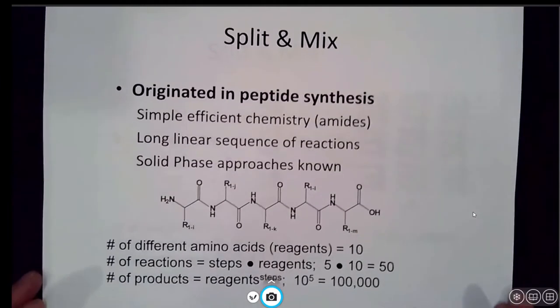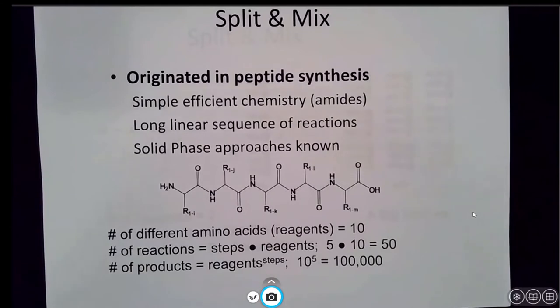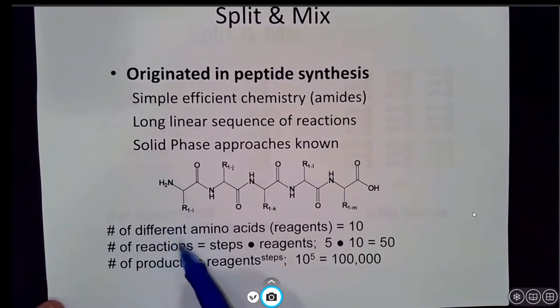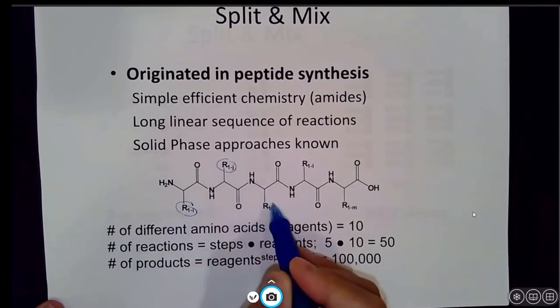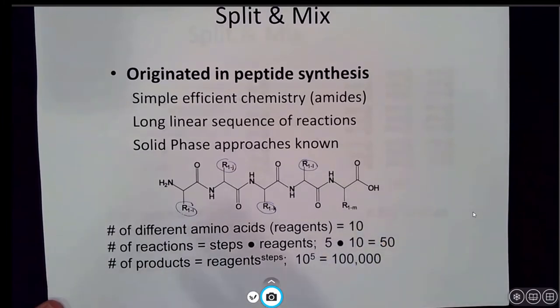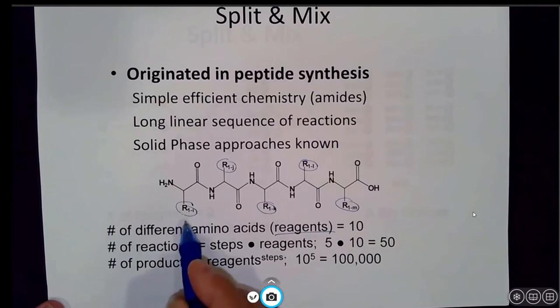I'm going to talk to you about a method called the split and mix method. This originated in peptide synthesis. You've already become very familiar with peptide synthesis - you can easily just change the R group and you can make very diverse peptides. With 20 different amino acids, it really gives us a lot of different options, and nature is certainly taking advantage of that, generating a very wide variety of different proteins and enzymes with vast structures and functions. If you take a look at this particular example, this is an efficient chemistry because amide synthesis is well adopted. In this example, if we have 10 different amino acids or reagents and we have five different reactions, that gives rise to 50 different reactions if you have 10 different amino acids.